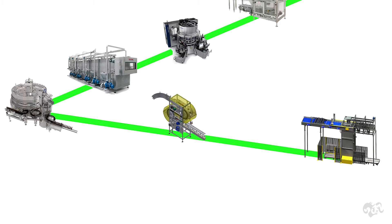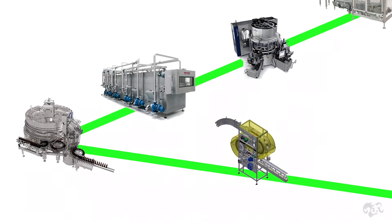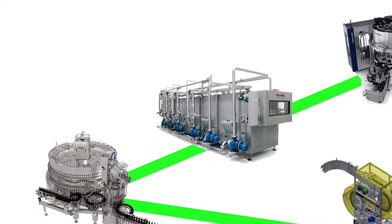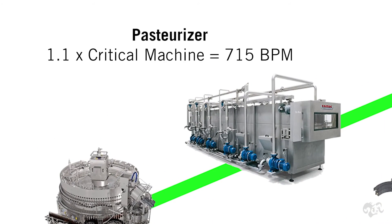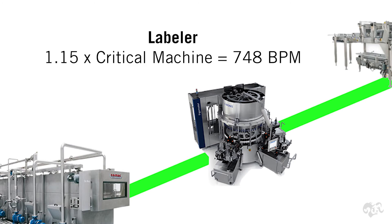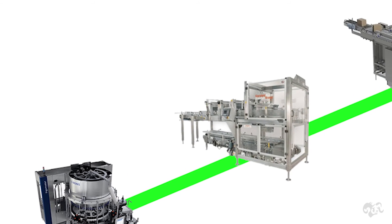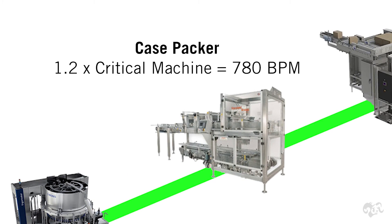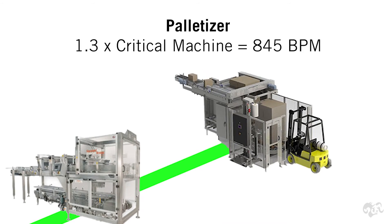Downstream from the machine we basically do the same thing. The pasteurizer is going to be set up at 10% over — 715 bottles a minute. We set the labeler up at 15% over speed, which is 748 bottles a minute. Then we'll set up the case packer at 20% over the filler speed, that's 780 bottles a minute. And lastly, we set the case palletizer up at 30% over — 845 bottles a minute.